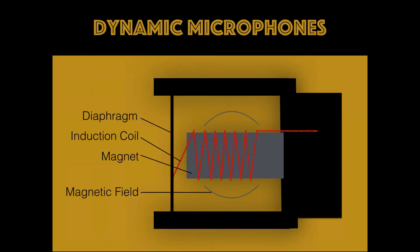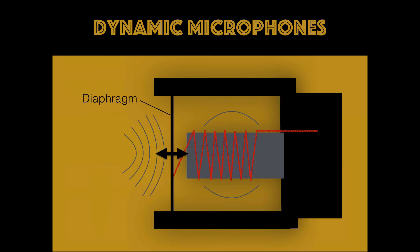Dynamic microphones function via passive electrodynamic transducers. All this means is that this type of microphone does not need any outside source of power to convert sound pressure into an electrical signal. The process begins when a sound wave pushes and pulls on the diaphragm of the microphone. In a moving coil microphone, an induction coil is attached to the diaphragm, which moves in sync with the compression and rarefaction of the sound wave.